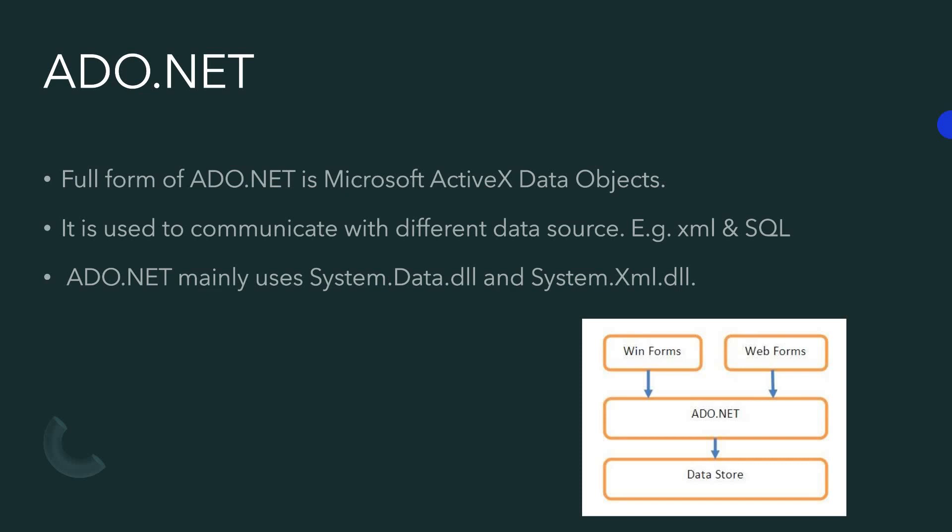The full form of ADO is Microsoft ActiveX Data Object. It is used to communicate with different data sources like XML, SQL, Oracle, and many other kinds of databases. Between the data source and the application, we need a bridge — ADO.NET is that bridge.